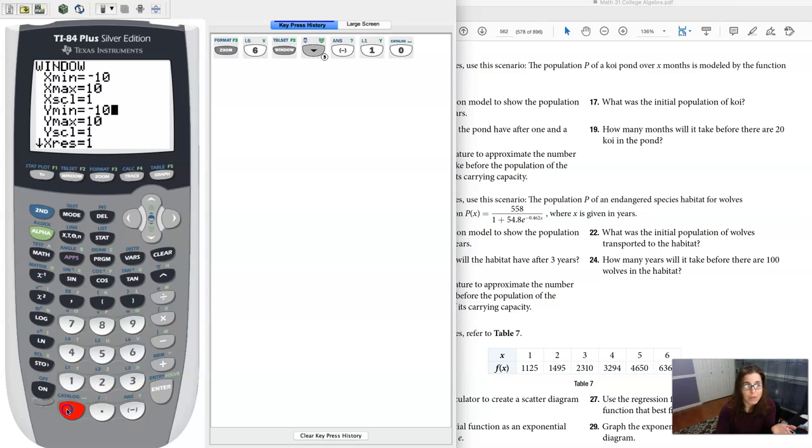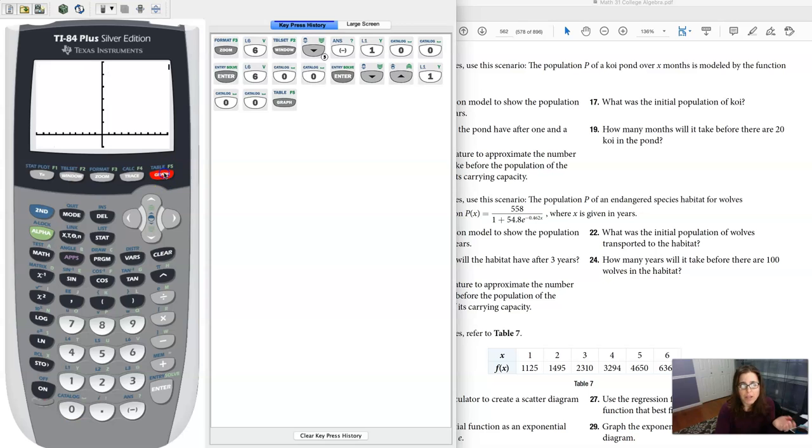I'm going to go down to negative 100 for my y min, and maybe I'll do like 600 for my y max, because I at least need to get that to 558. I'll go by hundreds on the scale. As soon as I rescale it, I'll just hit graph.